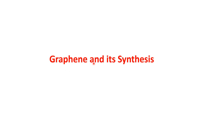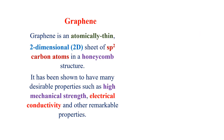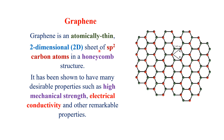Graphene and its synthesis. Graphene is an atomically thin, two-dimensional sheet of sp2 carbon atoms. Its structure looks like a honeycomb. The carbon atoms are sp2 hybridized and it is two-dimensional. It has many applications — it has high mechanical strength, electrical conductivity, and many more.